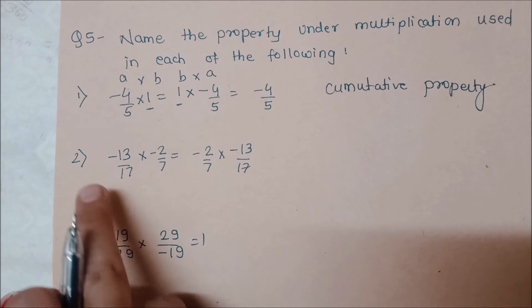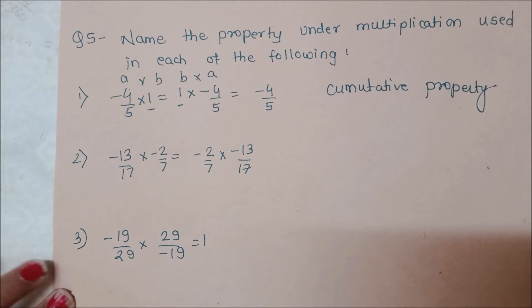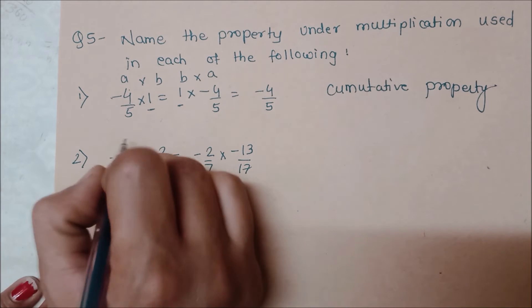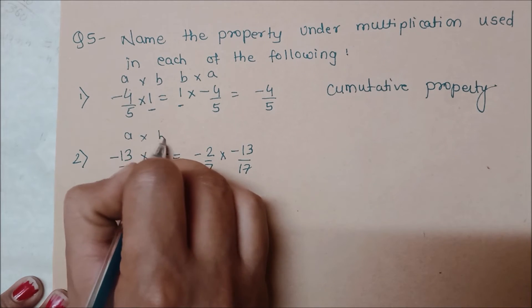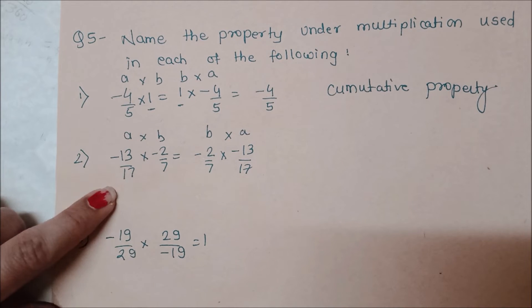Next, we will see minus 13 upon 17 into minus 2 by 7 equals minus 2 by 7 into minus 13 upon 17. I suppose that B is considered here. This is B, this is A.